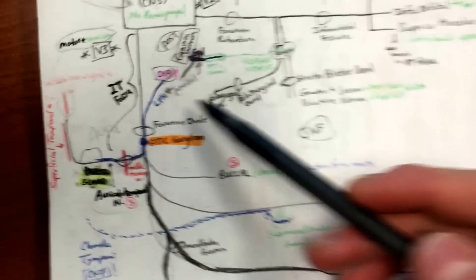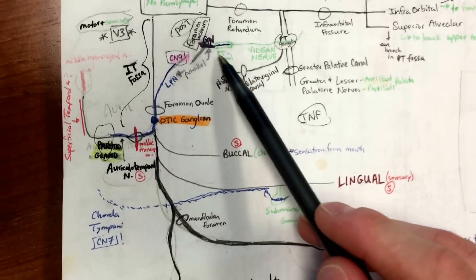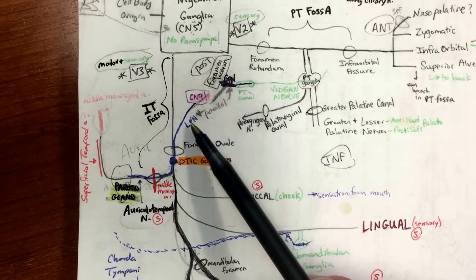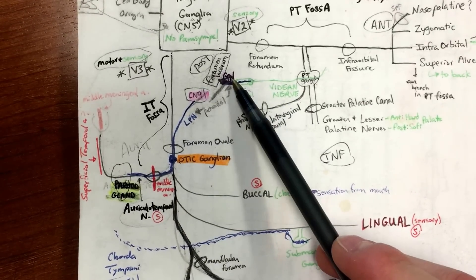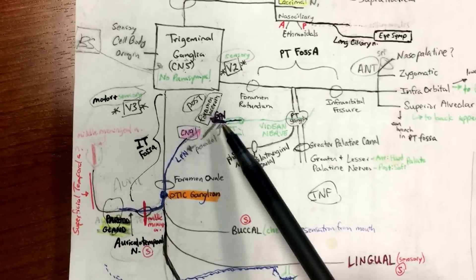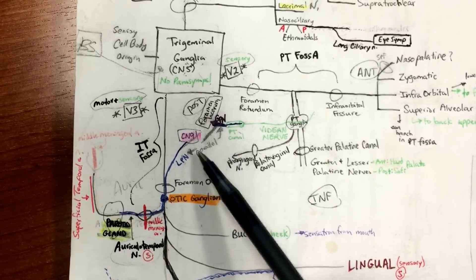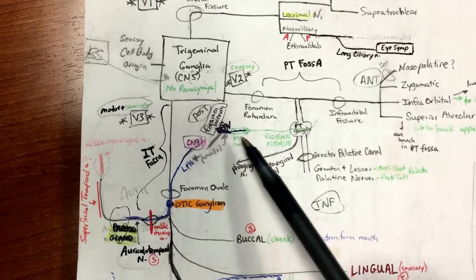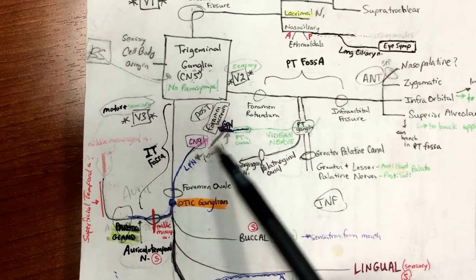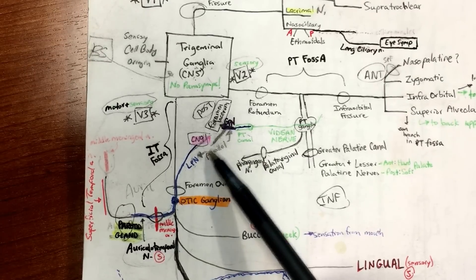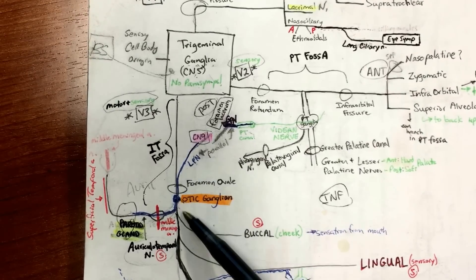Greater petrosal nerve and lesser petrosal nerve run parallel to each other. It's drawn here, and keeping in mind that they run next to each other, when you open up Netter's later you can actually see that relationship. It's nice having them close together here.